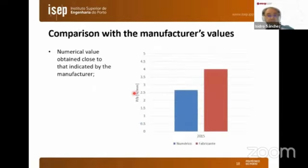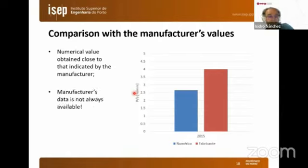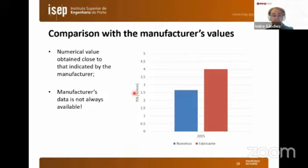Comparing this with the data provided by the manufacturer, we have a slight under-prediction. The manufacturer data states 4 Newton per millimeter following the same ASTM standard. However, we should take into account that manufacturer data is not always available, and our numerical approach was done using data from the literature obtained at a different testing speed, which can justify the difference in the prediction.